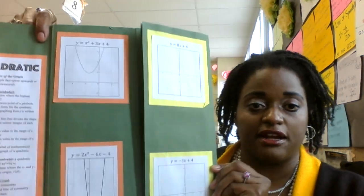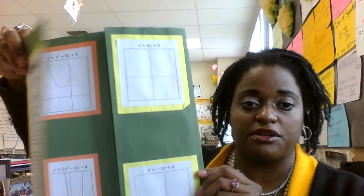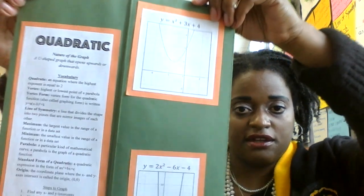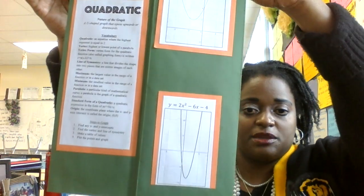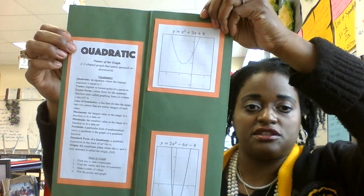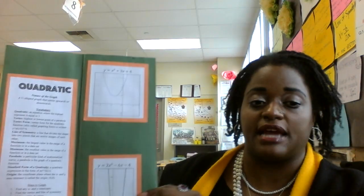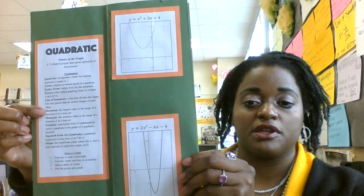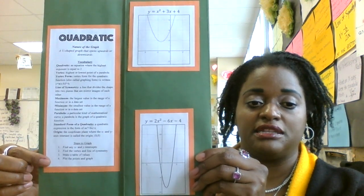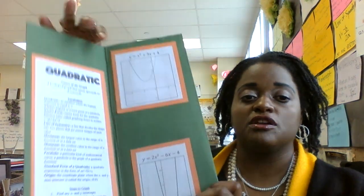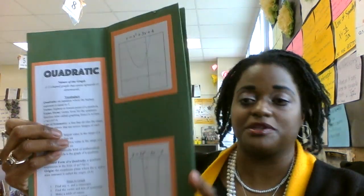Now quadratic — right there. She color-coded it: linear is yellow, quadratic is orange. Let's turn this around. So then we have quadratic functions, and they make the parabola graph, and she has the definition or the description of a quadratic graph right here. She actually called it the nature of the graph. It says a U-shaped graph that opens upwards or downwards. Then she has her vocabulary with definitions, then the steps to graph, and then over here we have our graphs. The vocabulary words she used here are not the same vocabulary words for linear, so please don't do that.